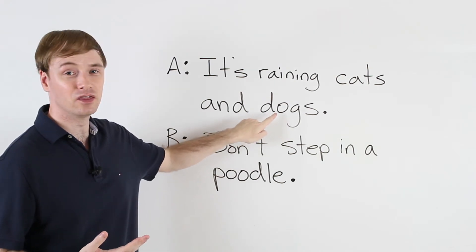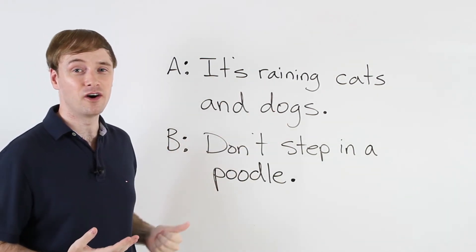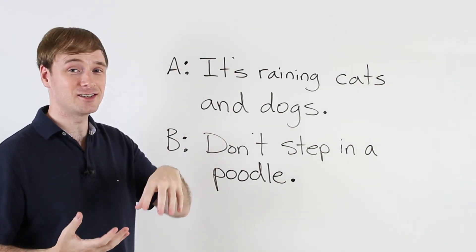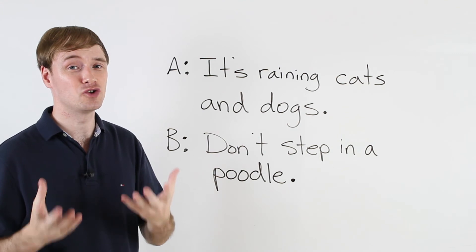Now why does he say that? Because it's raining cats and dogs, and the poodle is a type of dog. So if it's raining cats and dogs, don't step in the poodle. It's just a joke.